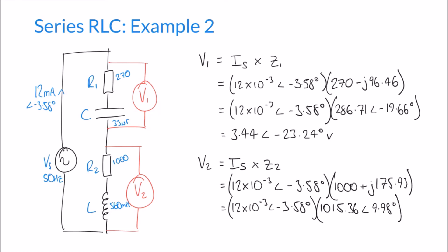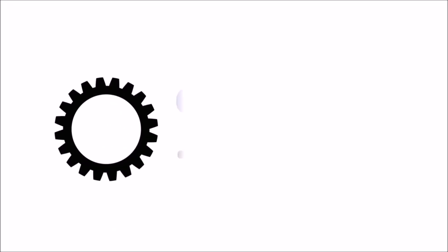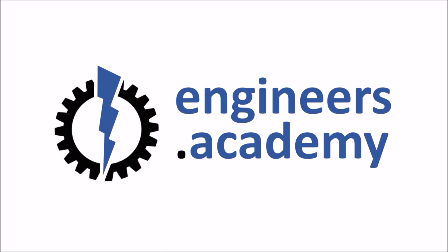Multiplying the two terms: V2 = (12 × 10⁻³ ∠ −3.58°) × (1015.36 ∠ 9.98°) = 12.18 volts at an angle of 6.4 degrees. That is our second voltage. I hope you found this video useful for this more complicated series RLC circuit. In our next video, we'll look at the concept of series resonance. We'll see you in the next video.